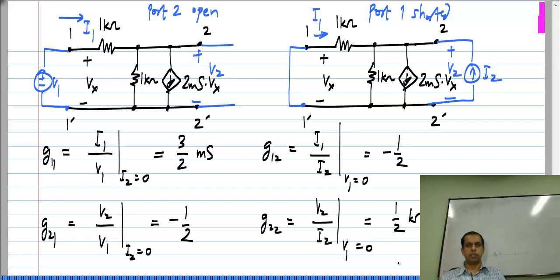So, these are the G parameters of the circuit. Please calculate this by yourself from scratch and also verify that this is the inverse of the H matrix you calculated earlier.